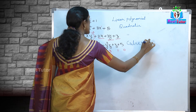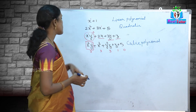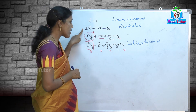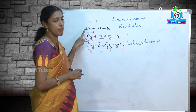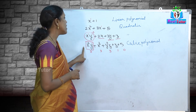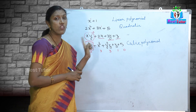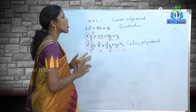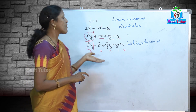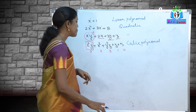It is called a cubic polynomial. Depending upon the number of variables we describe it further. x + 1 is a linear polynomial in 1 variable. 2x² + 3x + 5 is a quadratic polynomial in 1 variable. xy + 2x + 3y + z is a quadratic polynomial in 2 variables, x and y. x³ + y²z + z + 5 is a cubic polynomial in 3 variables: x, y, and z. If the highest power is 4, it is going to be called a biquadratic polynomial.